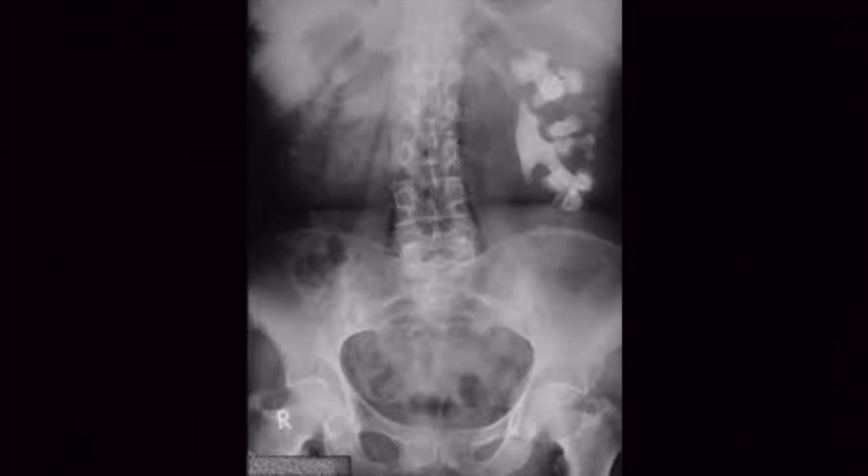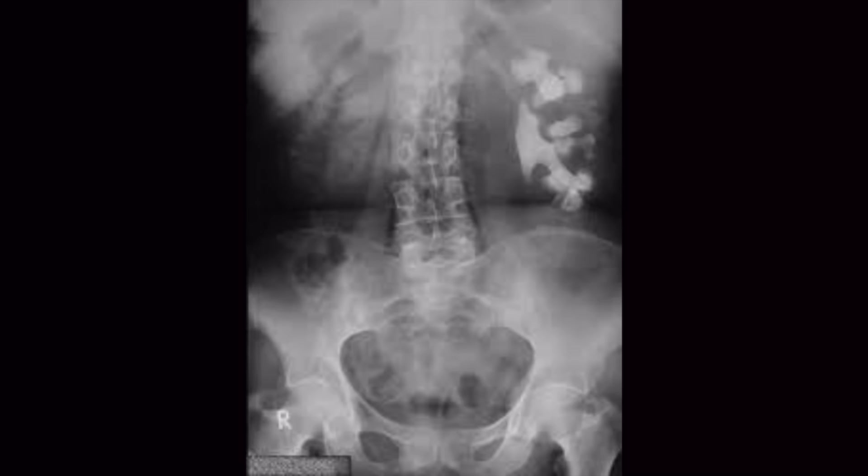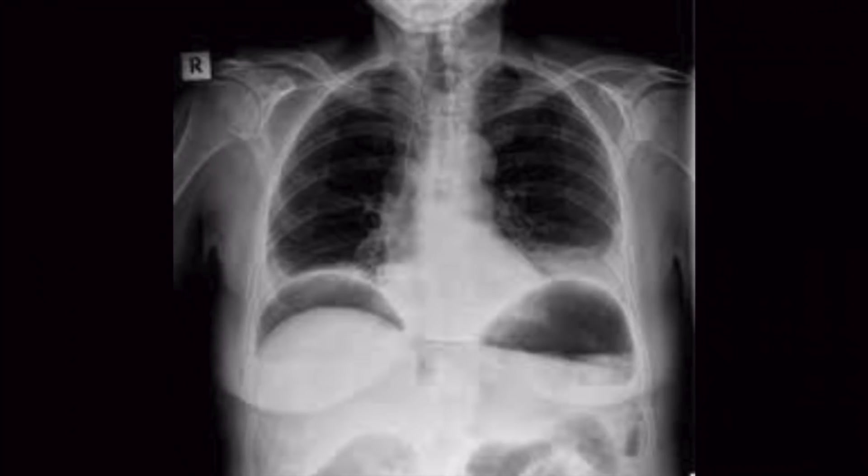Next question, here you will see in this radiological image the staghorn calculus is seen. So this is again one of the easy question and radiological question. Next question, you will see the air under diaphragm which is suggestive of intestinal perforation, and the management is emergency laparotomy.